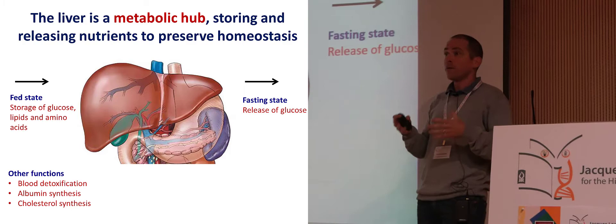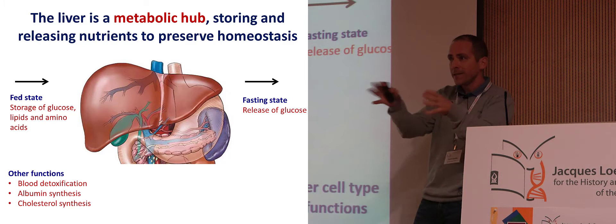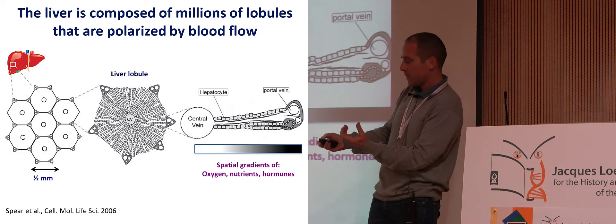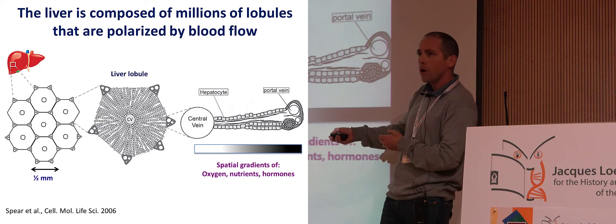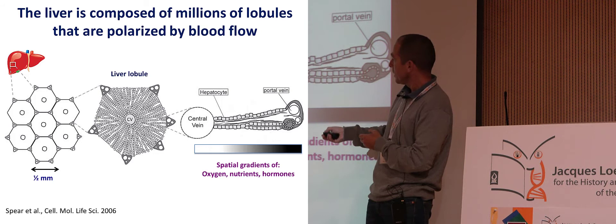All of these functions are performed by a single cell type called the hepatocyte. But the liver is not just chopped liver of identical hepatocytes that perform everything in the same way. When you section the liver, you see it has a beautiful stereotypical structure composed of hexagonal units — hexagonal columns called liver lobules. This is a blow-up of a liver lobule. Every lobule is half a millimeter in diameter, and it is polarized.